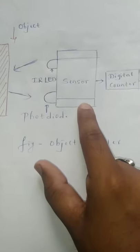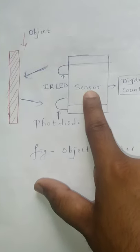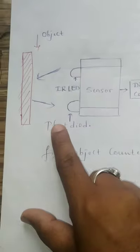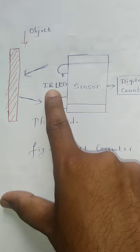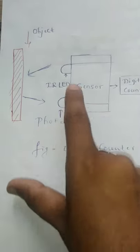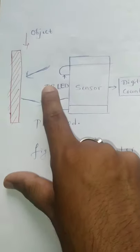So in working principle, the sensor consists of an IR LED and photodiode. The IR LED continuously emits light.